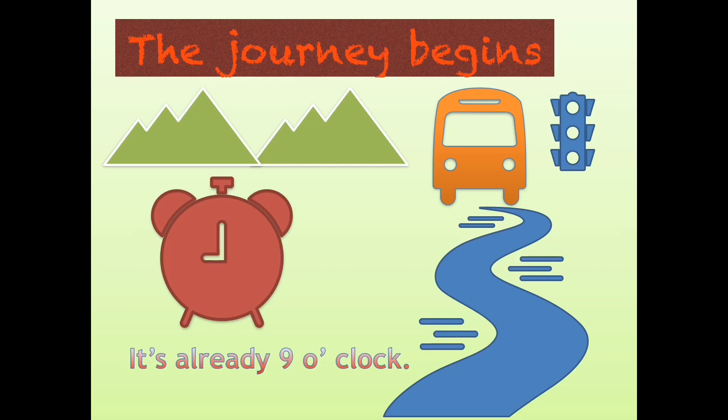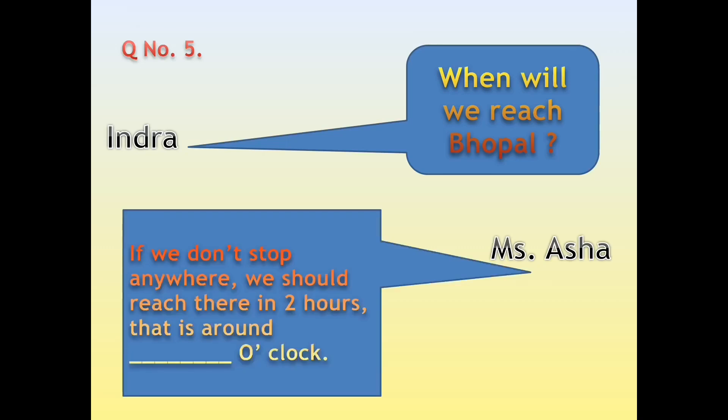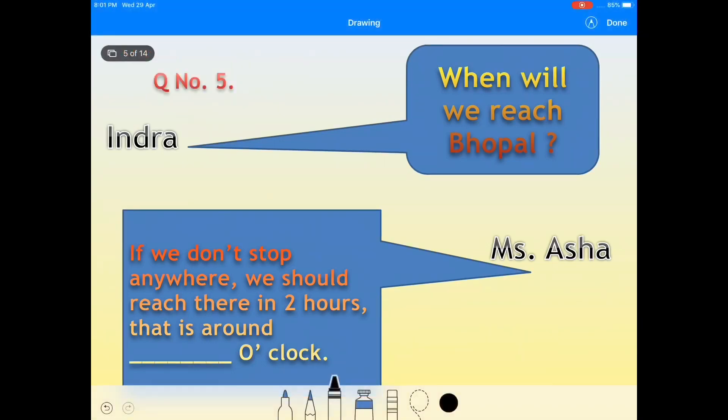Now, Question Number 5. Indra: 'When will we reach Bhopal, Miss Asha?' Miss Asha: 'If we don't stop anywhere, we should reach there in two hours, that is around 10 o'clock.' So the journey started at 9 o'clock, and after two hours means 9 plus 2 equals 11, 11 o'clock.